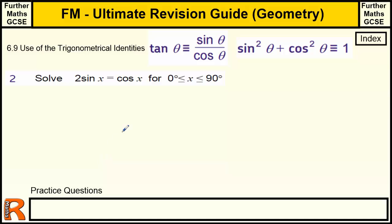2 sine x equals cos x for 0 to 90 degrees. Well, what we're going to look at here is this, sine theta divided by cos theta. So to solve this, it's much easier to divide by cos. So if we divide both sides by cos, we get sine x divided by cos x. And cos x divided by cos x is 1. So we've got sine x over cos x. So we've got 2 lots of sine x over cos x, which is 2 tan x. That equals 1. And so tan x equals 1 half.